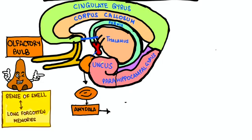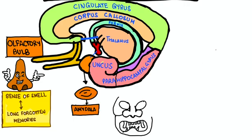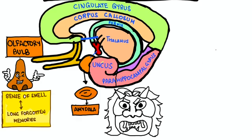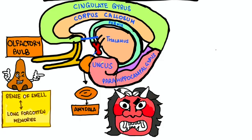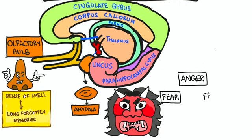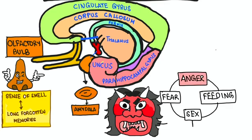Then amygdala. Amygdala, if you ask me, it is just the animal or the demon residing within each human. The basic inner needs like anger, fear, feeding, sex, all are the functions of amygdala.